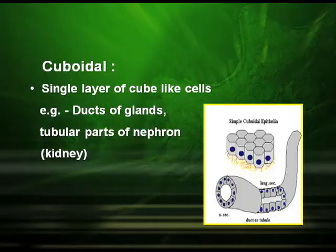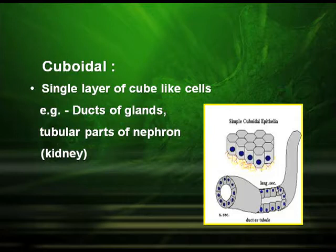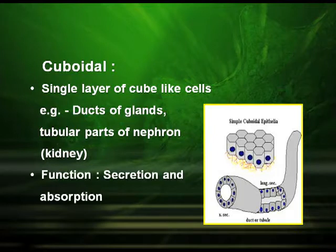The next type is cuboidal epithelium tissue. From the name, these cells are cuboidal in shape. They have a single layer of cube-like cells and are found in the ducts of glands and the tubular parts of the kidney, that is in the nephrons. Their function is secretion and absorption.